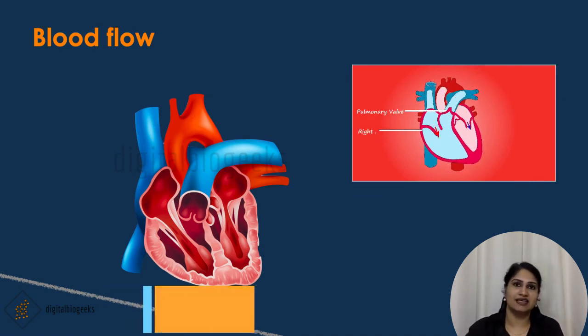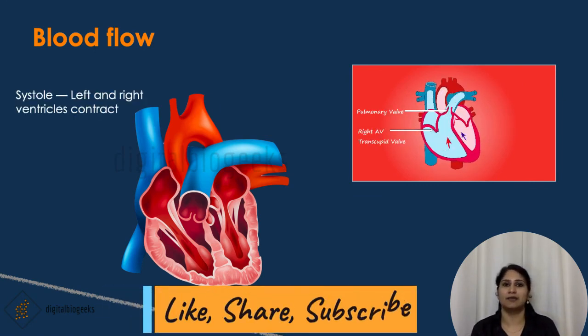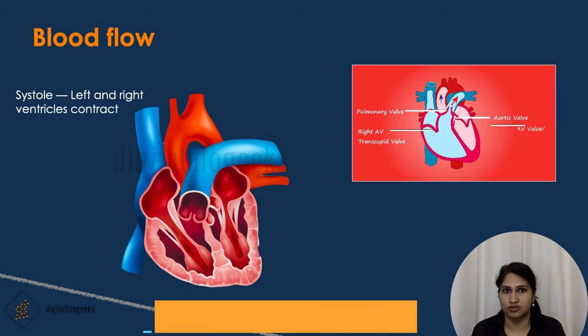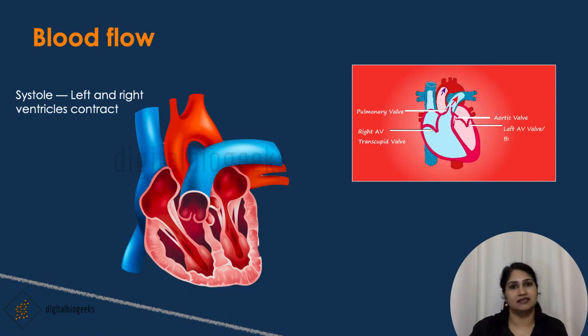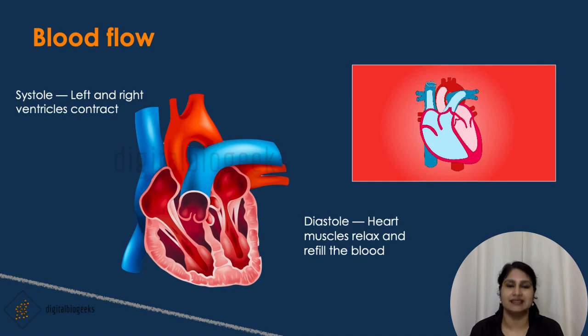In the cardiac cycle, systole occurs when the left and right ventricles contract, and diastole occurs when the heart muscles relax and refill with blood.